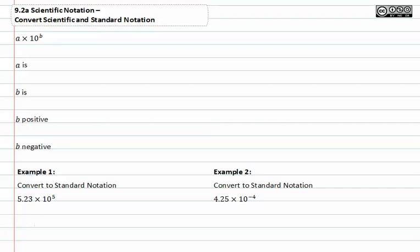Scientific notation's form is a times ten to the b, where a is some number or value that is between one and ten.